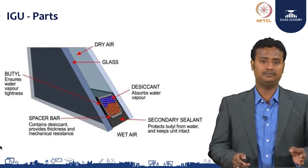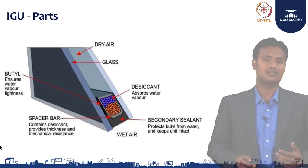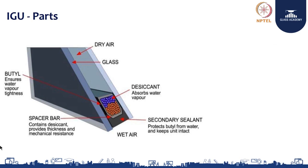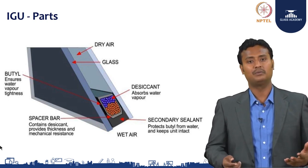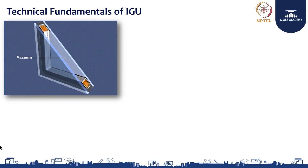Each component is highly helpful in terms of serving us to be comfortable inside the building, and these parts are highly helpful for making the IGU a grand success. The IGU is nothing but two or more glass panes separated by a mechanical aluminum channel, hermetically sealed with primary and secondary silicone. The air space may be dry air, vacuum, or inert gas — argon or krypton.